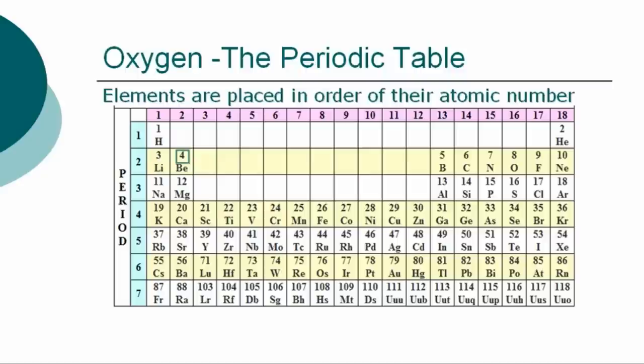The periodic table is a chart showing the symbols and the atomic numbers of all known elements, such as oxygen, in one large grid. The chemical elements of the periodic table are placed in order of their atomic numbers. Atomic numbers increase as you move across a row, called a group, or down a column, called a period.